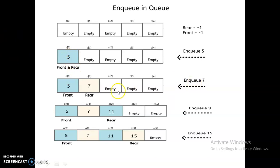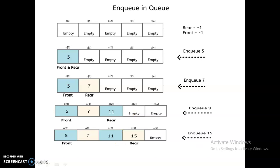When inserting 7, front stays at position zero and only rear is incremented — from zero to position one — and 7 is inserted at queue[rear]. Then enqueuing 9 increments rear to position two. Enqueuing 11 places it at position two, and enqueuing 15 increments rear to the next position. Just like people joining a queue, 5 came first, then 7, 11, 15.